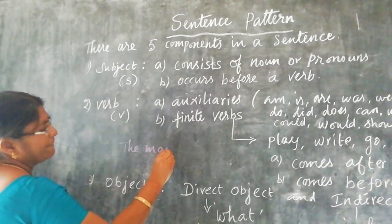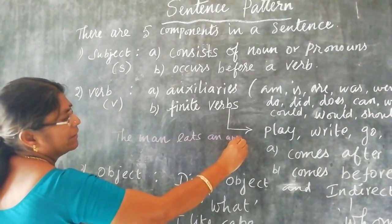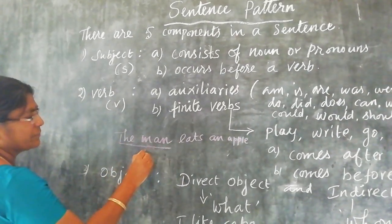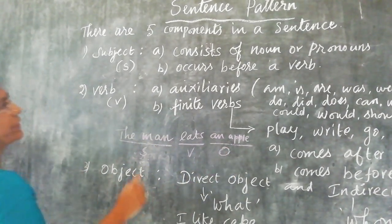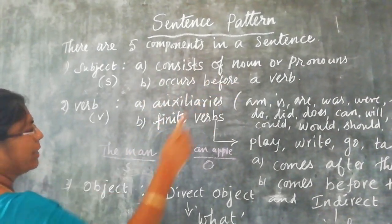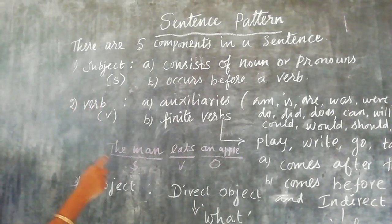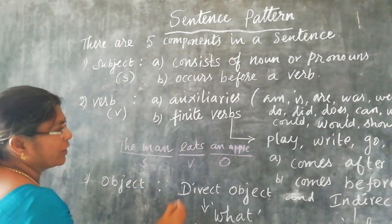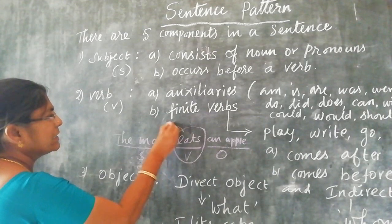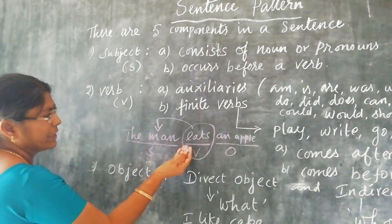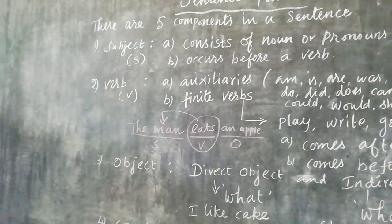For example: 'The man eats an apple.' Here, 'the man' is the subject, 'eats' is the verb, and 'apple' is the object. Subject consists of a noun or pronoun — here, 'the man' is a noun. It occurs before the verb 'eats.' So, the subject comes before the verb.